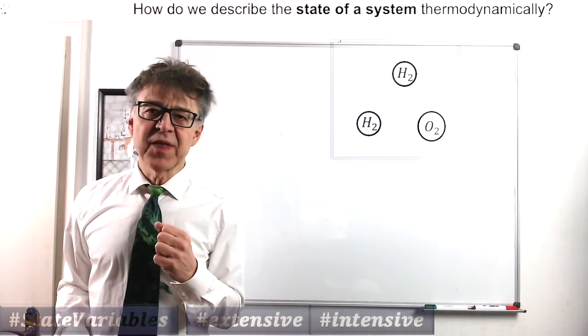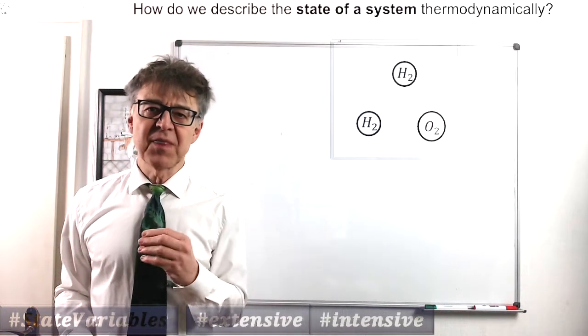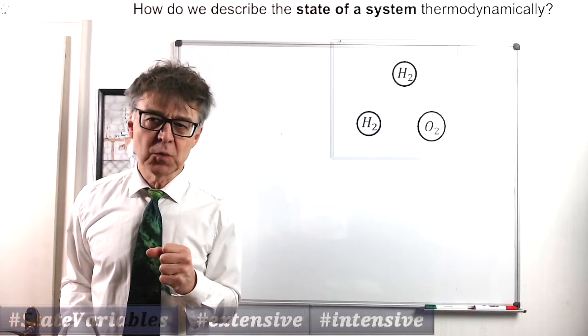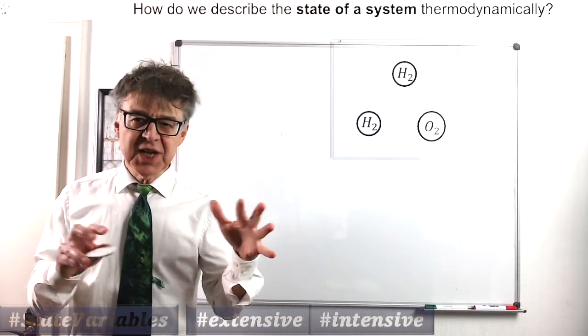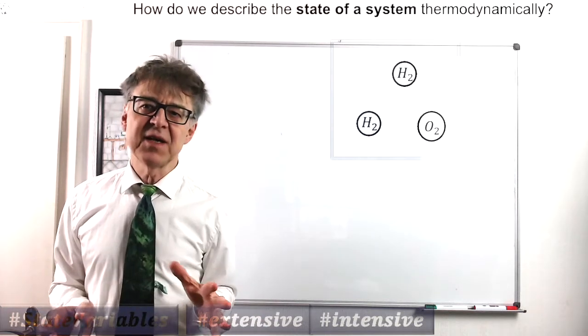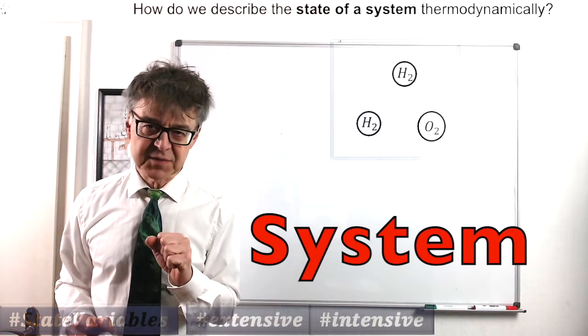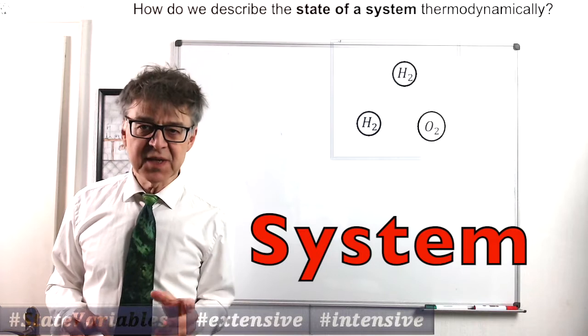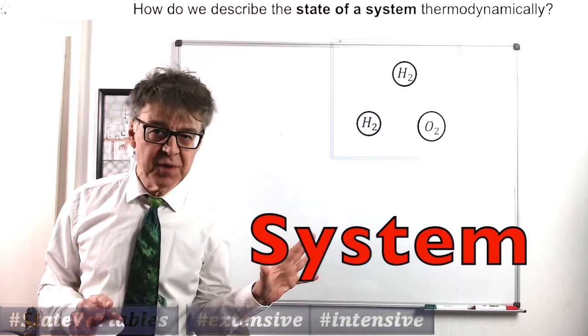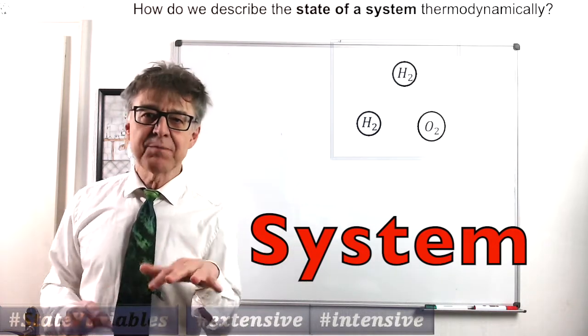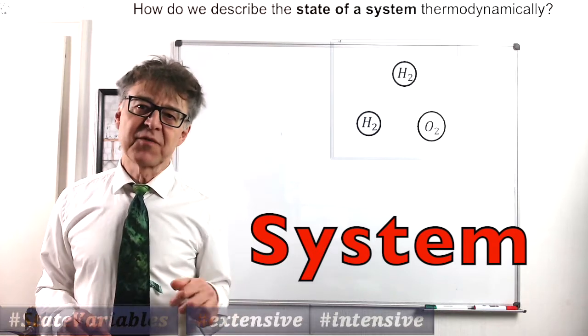Let's start with the reactants. Oxyhydrogen, that is 2 moles of hydrogen and 1 mole of oxygen, are in a container, and this container is referred to as system. A thermodynamic system is a part of the physical universe with a specified boundary which separates it from the surroundings.